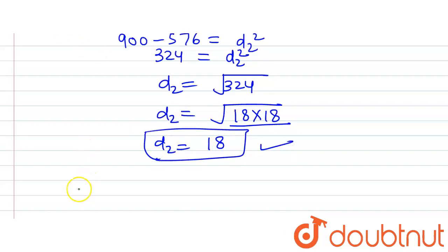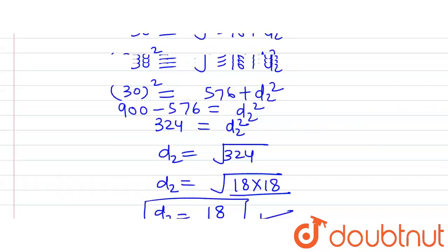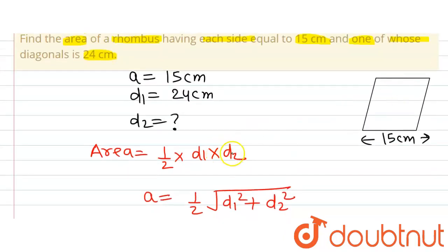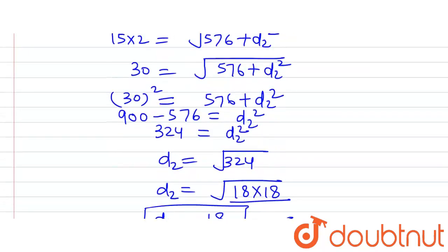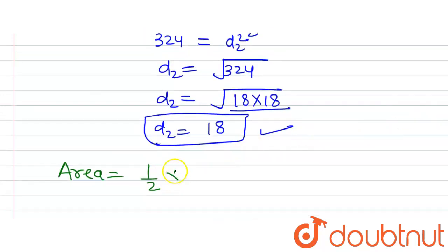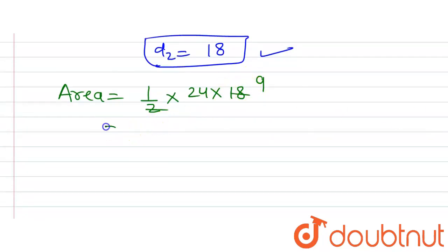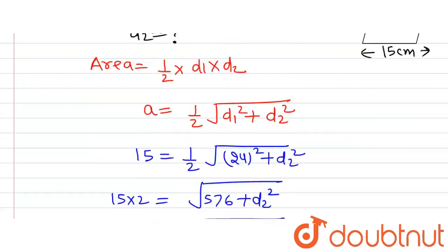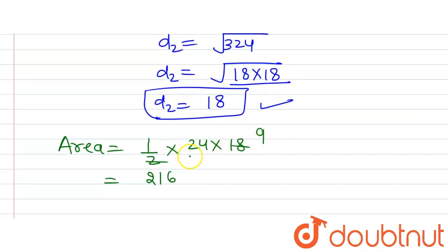Now we are going to use the formula for area of rhombus and put the values of the diagonals in that formula. The formula is half multiplied by D1 multiplied by D2. D1 is 24 centimeters, D2 is 18. So half multiplied by 24 multiplied by 18. 18 divided by 2 is 9, 24 multiplied by 9 will be 216. Since the diagonals are in centimeters, the area is 216 centimeter squared. This is the area of the rhombus we were supposed to find.